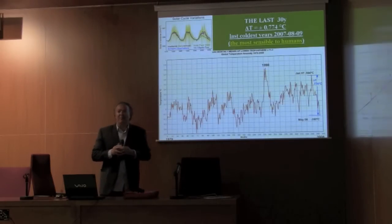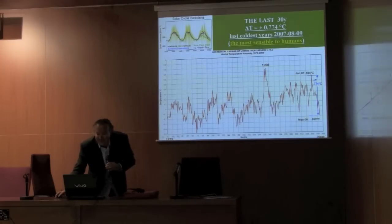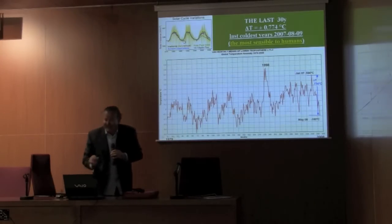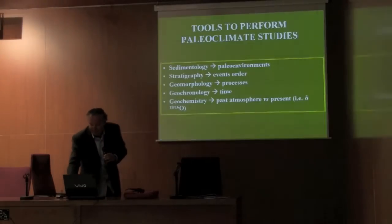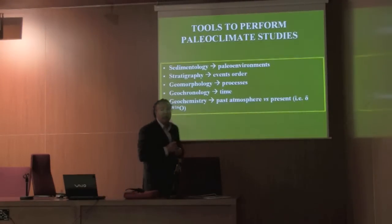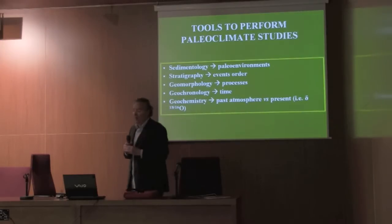We are now trying to understand solar cycle variations. We have seen that every ten years we have a maximum peak and a minimum peak, and we have seen that Earth's climate is sensitive to these variations. So now you have a kind of background to understand the next step of my talk.